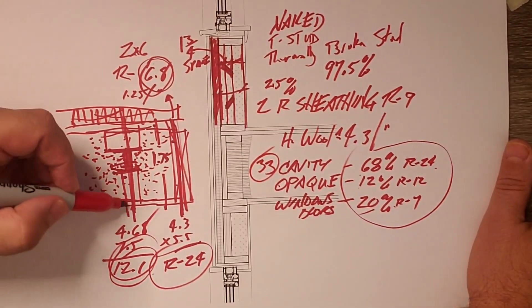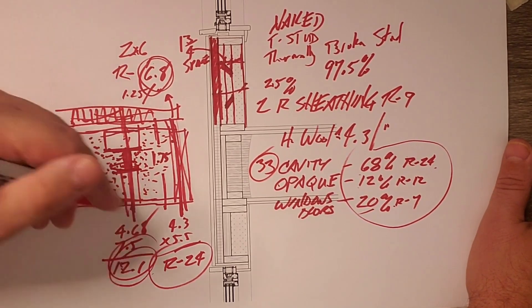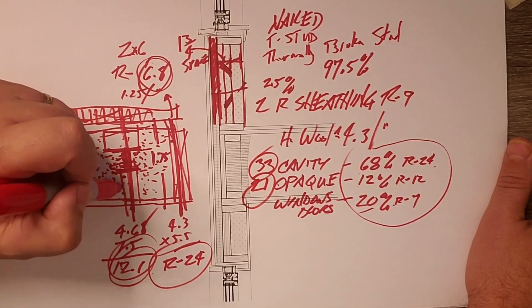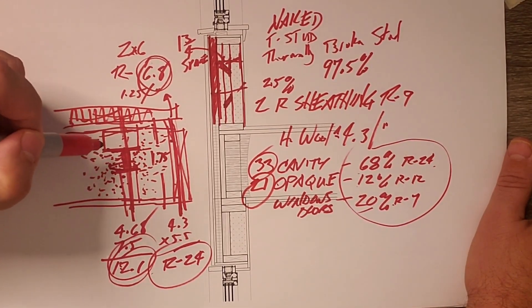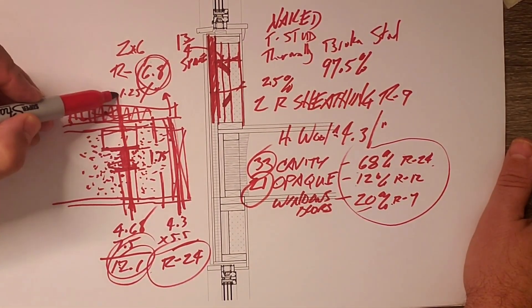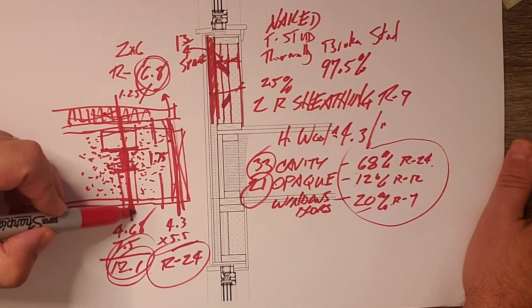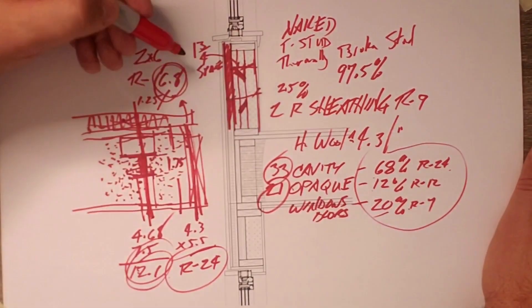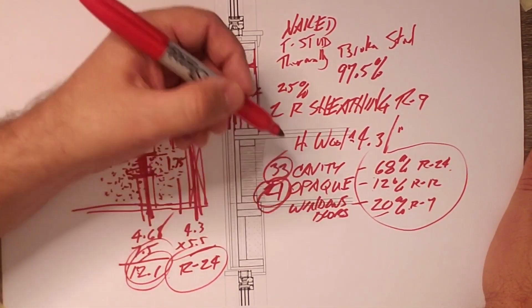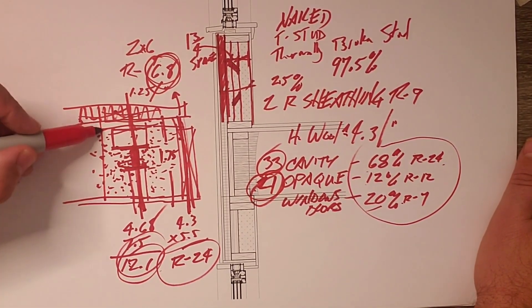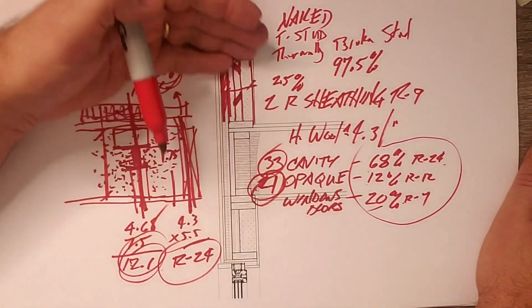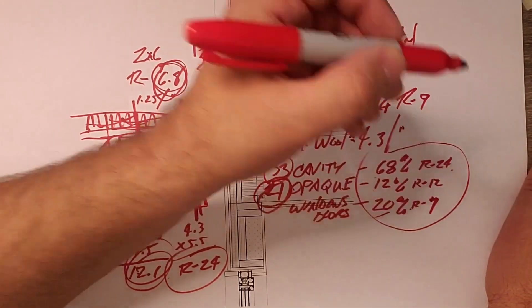Now the opaque area where the stud is at 12 well I get that value of the 9 there so I get 21 there. So you can see by using the T stud and the Zip R9 the value across the opaque line where it would normally be R6.8 I'm at R21 which is the code requirement for the cavity line which we have at R33 here. So by boosting those numbers and getting the better window we boost our overall what we call whole wall R value.